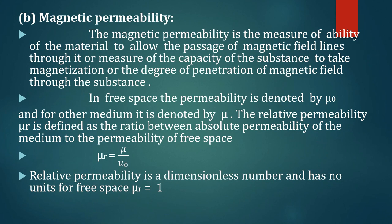Magnetic permeability is the measure of the ability of a material to allow the passage of magnetic lines through it. It is also the measure of the capacity of a substance to take magnetization, or the degree of penetration of magnetic field through the substance. For free space, the permeability is denoted by mu zero.